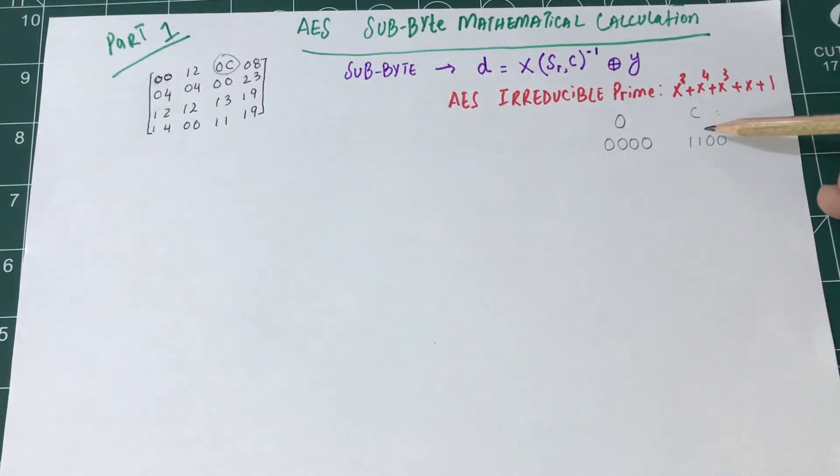C is 12, and 12 in binary is 8 plus 4, which is 1100. Since hexadecimal is a 4-bit number, this converts to polynomial degrees. This is x^0 which is 1, this is x^1, x^2, x^3. The zeros don't matter, so 0C becomes x^3 + x^2 in polynomial form.